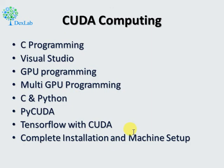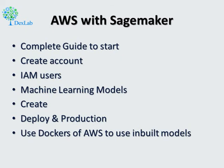Then I teach AWS (Amazon Web Services): how to create an account, handle various accounts, make IAM users, write certificates for other users, use S3 (Simple Storage Services), use EC2 services. One great benefit is SageMaker — which gives you direct Jupyter Notebooks to create and deploy models. I teach SageMaker in detail: complete guide to start, create machine learning models, deploy to production, use Docker on AWS to use inbuilt models, and various other things.